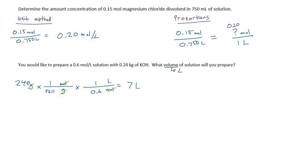So what this is saying is if we take our 0.24 kilograms and we make a 7 liter solution out of it, so say we dump it into 6 liters then we top it up till it's exactly at 7 liters, we will have created a 0.6 mole per liter solution.